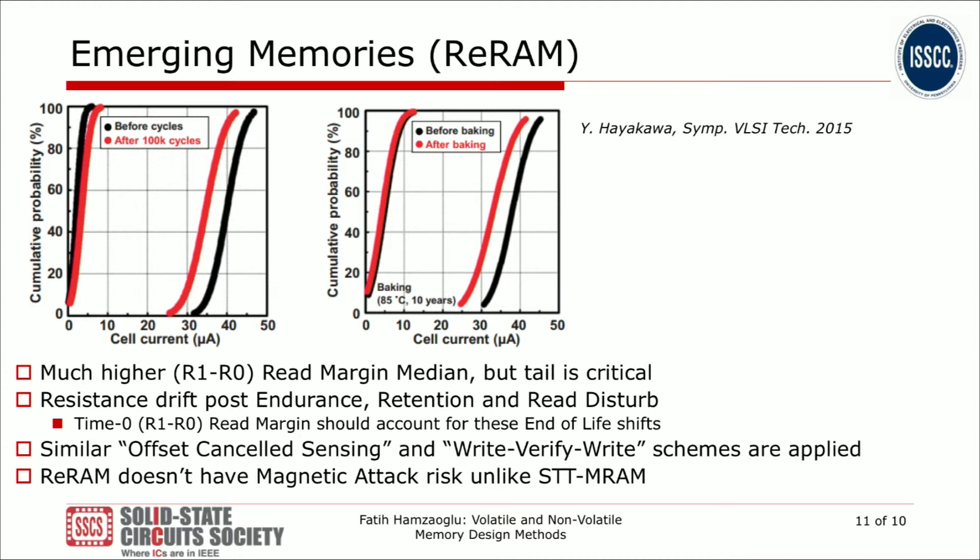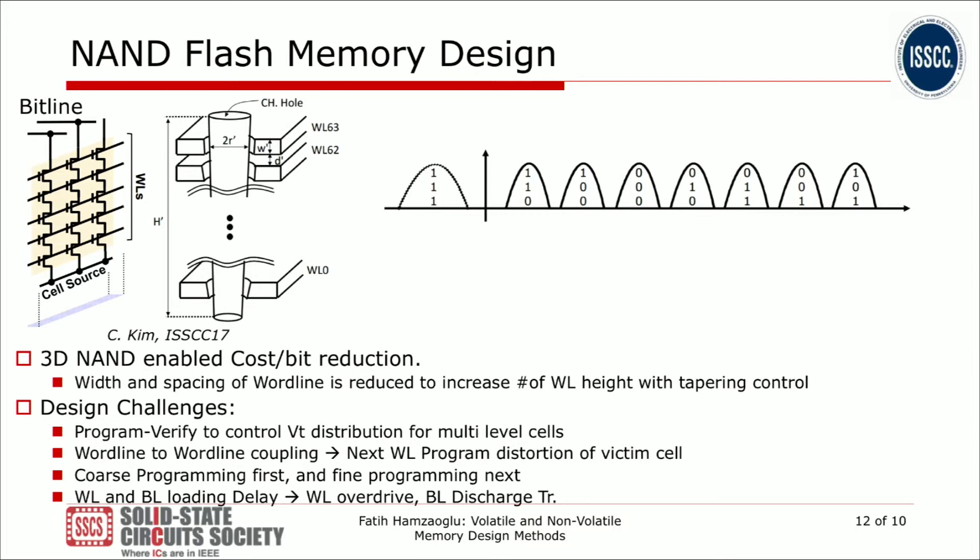You have to take into account three criteria for end-of-life read margin: write cycling drift, bake/retention drift, and read disturb. Similar circuit techniques are used in RRAM — offset cancellation sensing and write-verify-write to improve endurance. One additional advantage is that RRAM does not have the magnetic attack risk that STT-MRAM has.